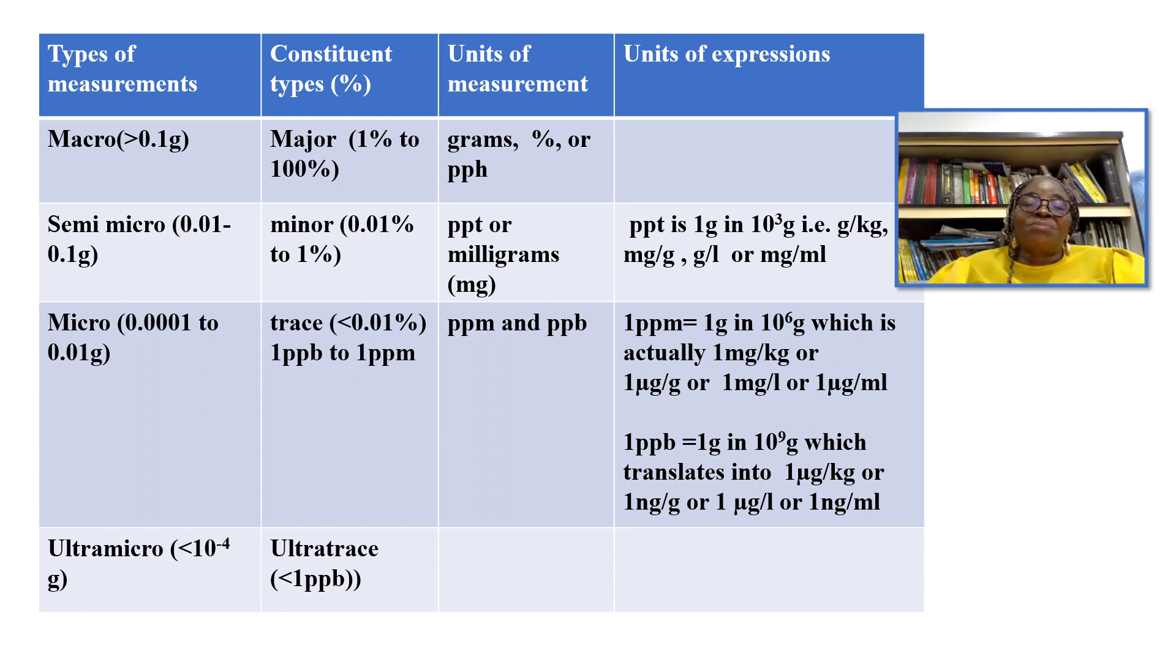These are the units of measurement and we have the units of expression. Parts per thousand is 1 gram in 10 raised to power 3 grams and it can be represented in grams per kilogram, milligrams per gram, grams per liter or milligrams per milliliter.